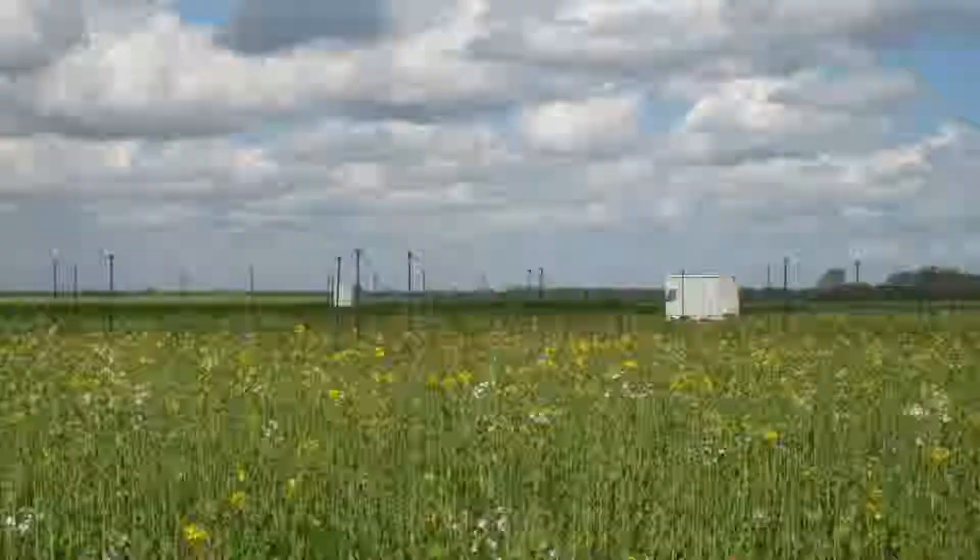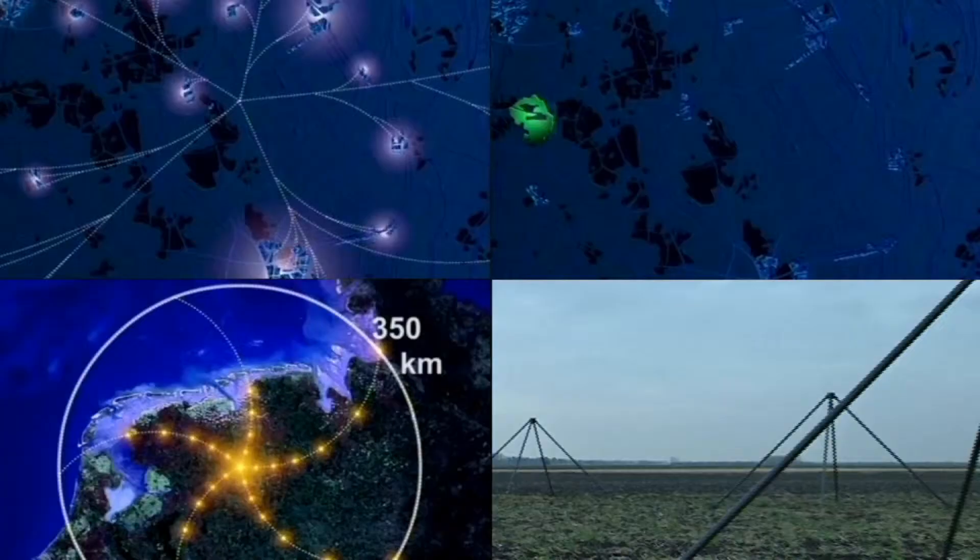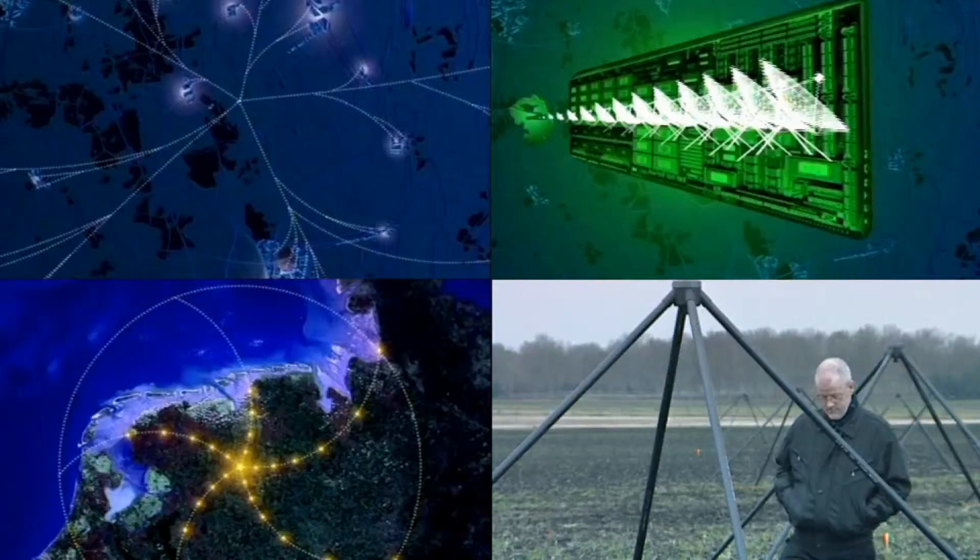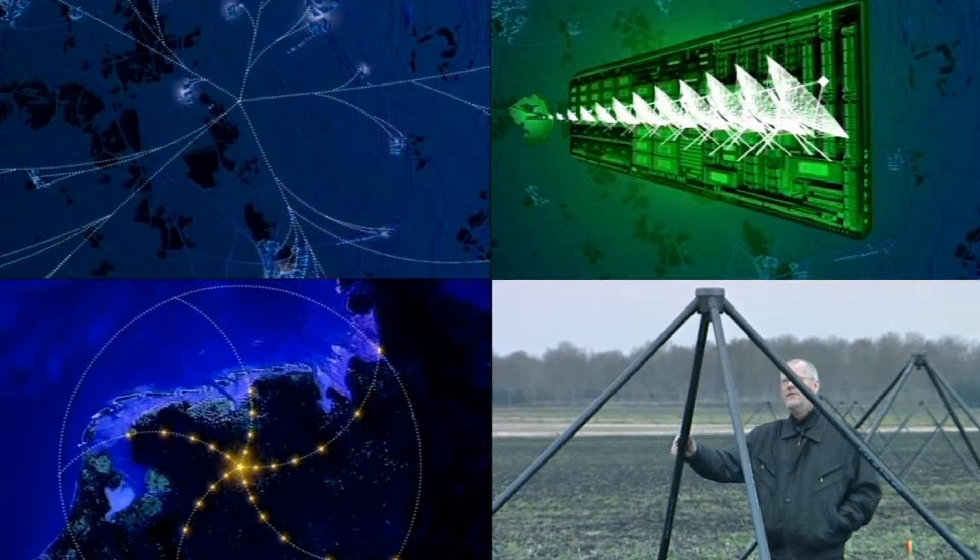In the Netherlands, the low-frequency array, called LOFAR, is under construction. Fiber optics will connect 30,000 antennas to a central supercomputer. The novel design has no moving parts, but it can observe in eight different directions simultaneously.